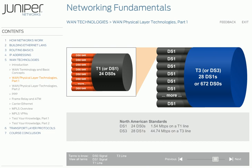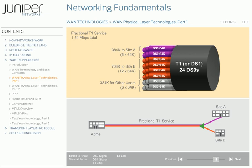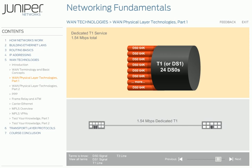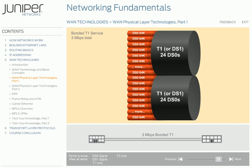Years ago, when digital communication lines were very expensive, a company might not need the full 1.54 megabits per second between each location. Instead, a company might only need 384 kilobits per second, or 6 DS0s, to one location, and 768 kilobits per second, or 12 DS0s, to a second location, and purchase a fractional T1 service. In the example shown on screen, Acme Company has a 384 kilobits per second connection to Site A and a 768 kilobits per second connection to Site B. The provider can offer the remaining bandwidth to other customers. Most companies now use the entire T1 line for data. For more bandwidth, service providers bundle T1 lines together and offer a bonded T1 service.